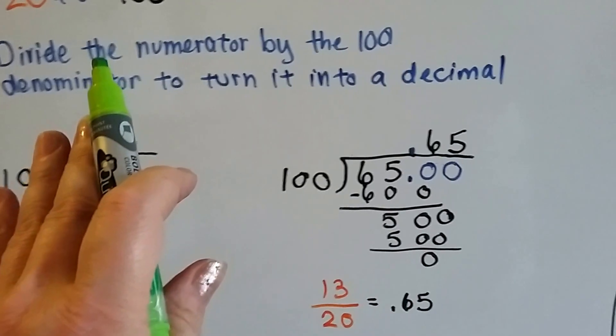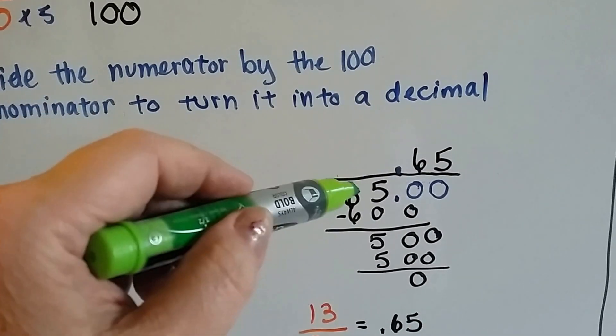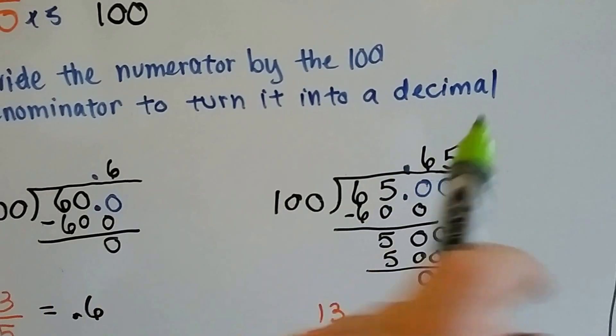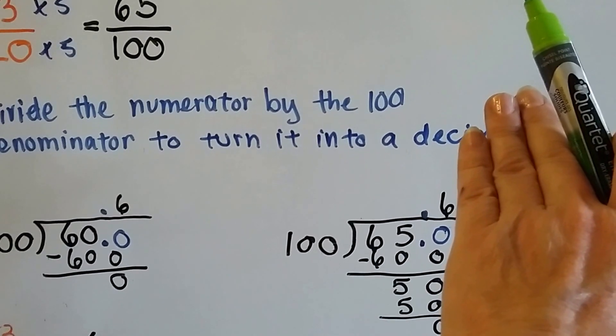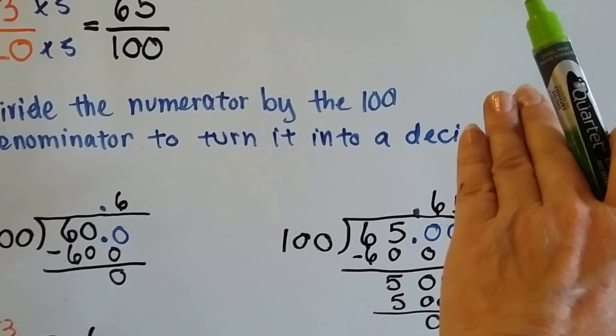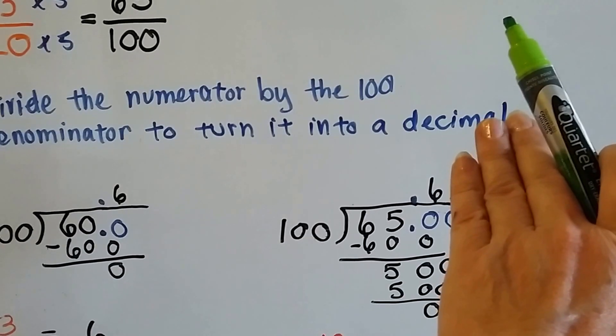We'll hold that off on the side for now. The 65 divided by 100. 100 can't go into 65, so we add a decimal point and some zeros. It can go into 650. It goes in there six times. And 6 times 100 is 600. We do our subtraction and we get 50 left over.